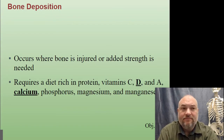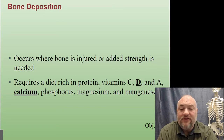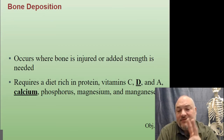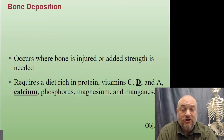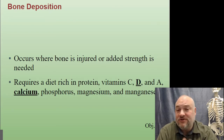After growth, we deposit bone where it's injured for healing, or where we need extra strength. To do this, you need a diet rich in protein, vitamins C, D, and A, calcium, phosphorus, magnesium, and manganese. Two key things are calcium — over half your bone is calcium — and vitamin D, which is needed for your body to process calcium. That's why calcium supplements usually combine calcium with vitamin D, since without enough vitamin D you can't absorb the calcium.